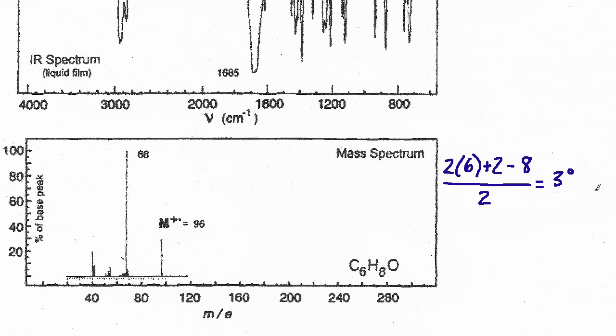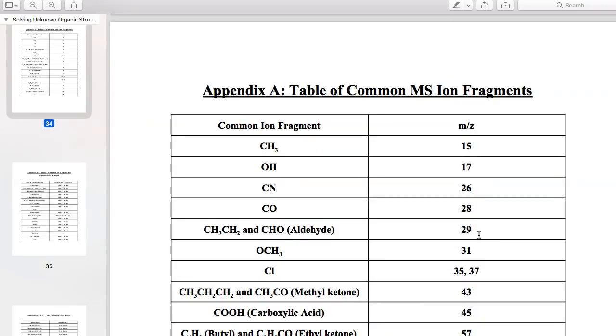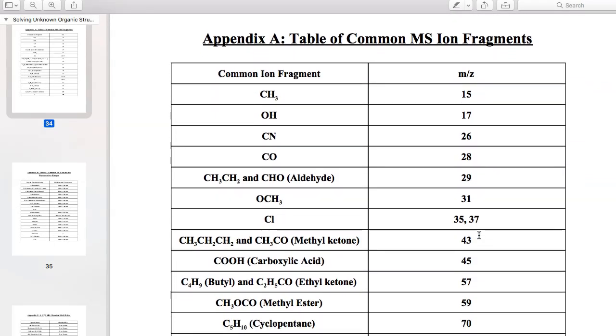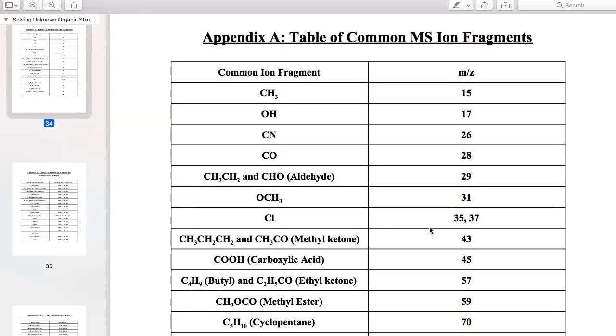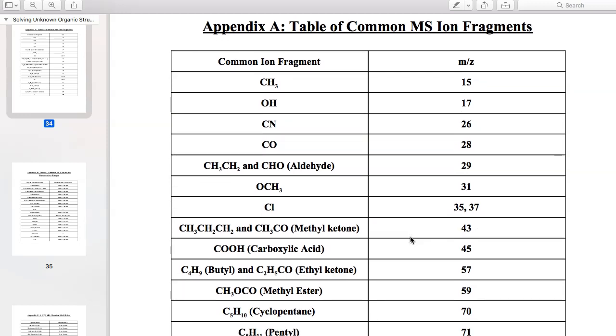Now the next thing we're going to do is take a look at the mass spec. With the mass spec we can confirm that we have an M+ peak of 96 so that would be the molecular weight of C6H8O and then we would take a look at the difference here, the 96 minus the base peak of 68, and if I take a look at the difference for that it ends up at 28. So the question is, for 28 what is a common fragment that could potentially be 28? If you have the unknown solving guide on our website for five dollars in appendix A you can see the common ion fragments. You could find this type of information online as well. So 28 on the reference table is a CO, so it's a carbonyl group.